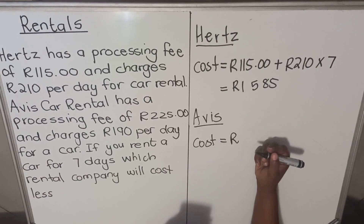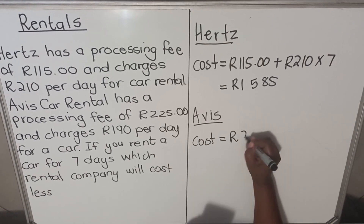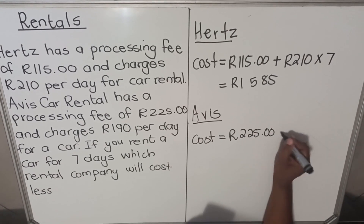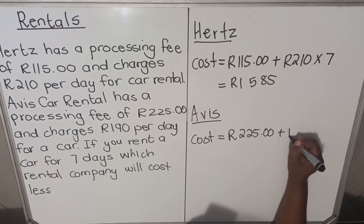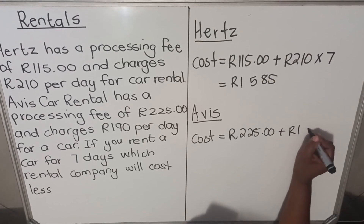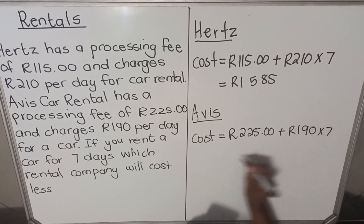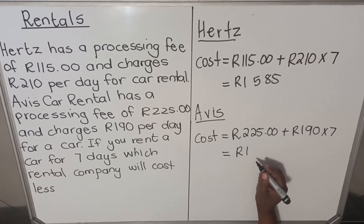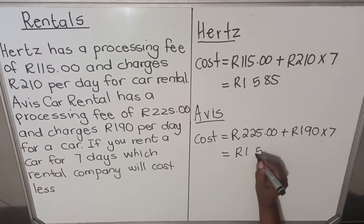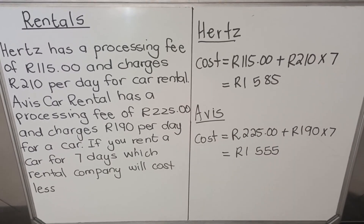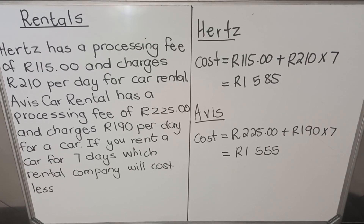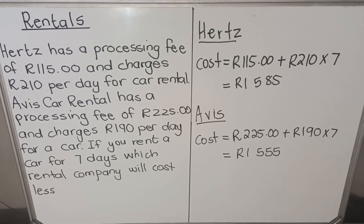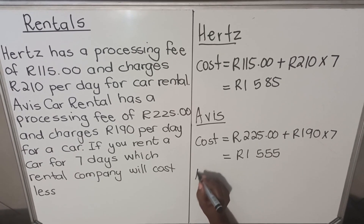For the second company, Avis, the cost is 225 plus 190 times seven. Using a calculator, the total comes to 1555. So if you hire the car for seven days, Avis is less expensive.